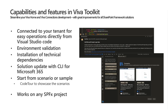You can install missing dependencies by clicking a button and the tooling will make sure your environment is ready to go. It also supports updating solutions using the CLI for Microsoft 365 automation. You can start from scenario samples — for example, calling Microsoft Graph to get data with a code tour providing step-by-step guidance. This actually works in any SharePoint Framework project, not just Viva. If you open the Viva Toolkit in any SPFx solution folder, it gives you additional value.